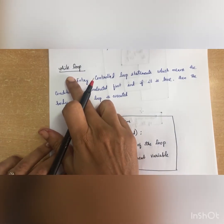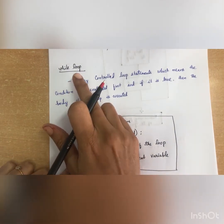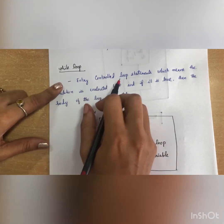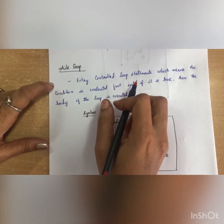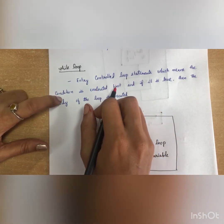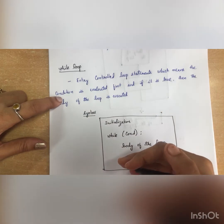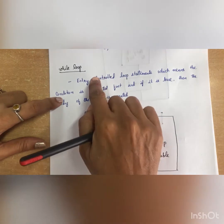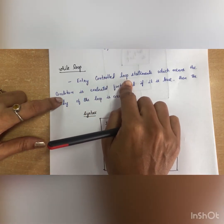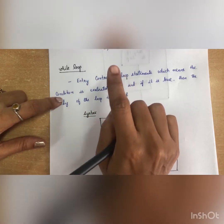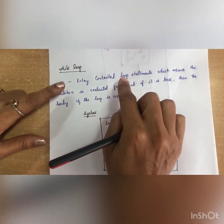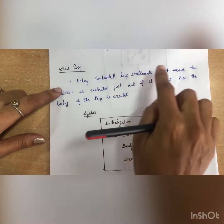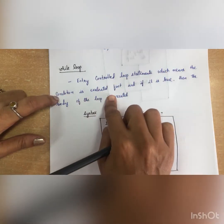First we will see the while loop. The while loop is an entry controlled loop statement. What that means is it will check for the condition first. If the condition is true, it will execute the body of the loop. If the condition is false, it comes outside. In C language we have while loop and do-while loop, but in Python we have only while loop.